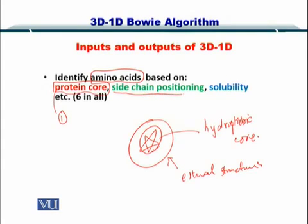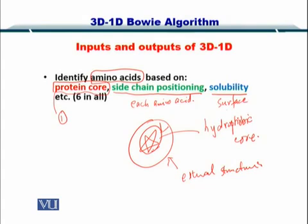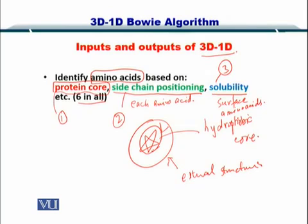Secondly, you have to identify the side chain positioning — the side chains for each amino acid are considered. And lastly, the solubility of the surface amino acids. Considering these three properties, and some other properties — in the case of the 3D-1D algorithm there were 6 in total — you create a profile.